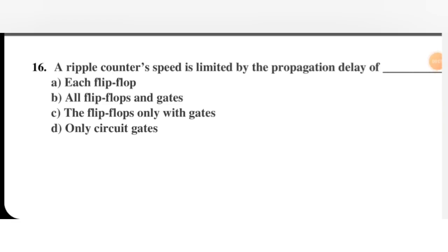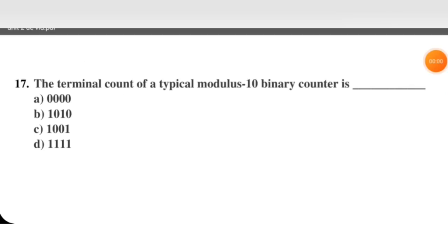Next question: a ripple counter's speed is limited by — the propagation delay of each flip-flop, all flip-flops and gates, the flip-flop only with gates, or only circuit gates. The right option is A — each flip-flop — because every flip-flop is triggered separately; the first triggers, its output triggers the next one, and so on.